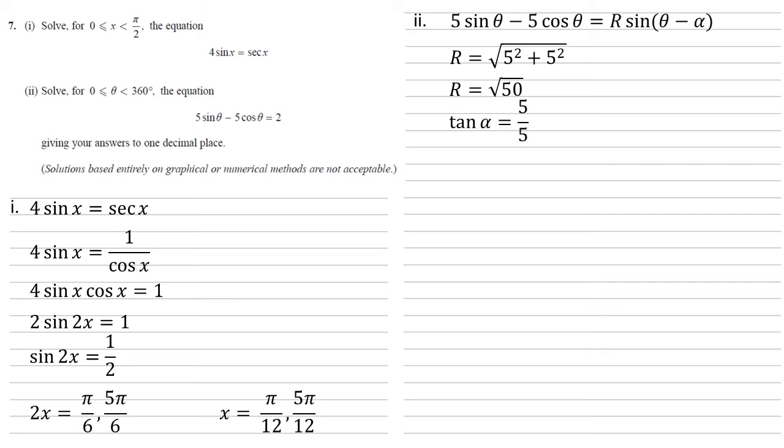And tan alpha is equal to the coefficient of sin over the coefficient of cos, so 5 over 5. And if tan alpha is equal to 1, then alpha must be 45 degrees.